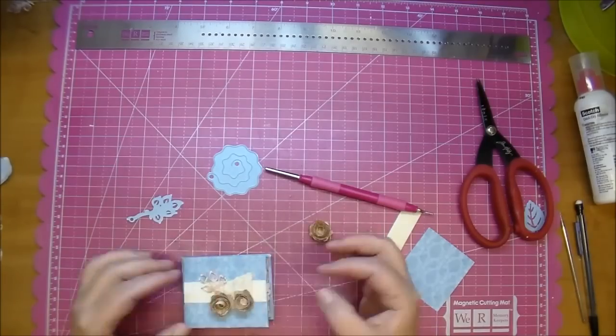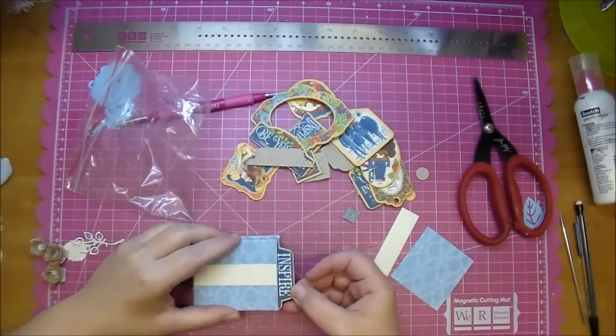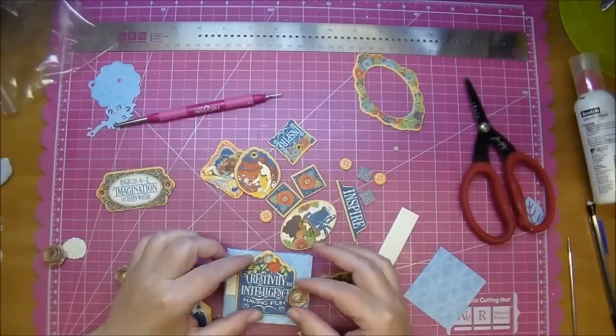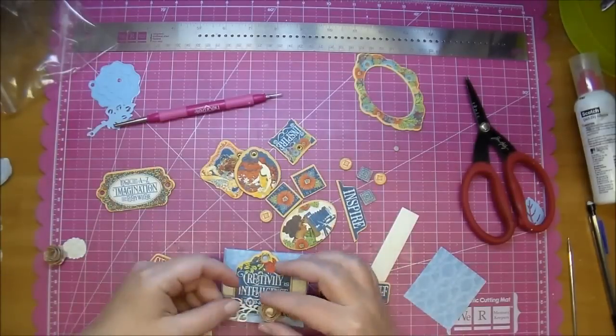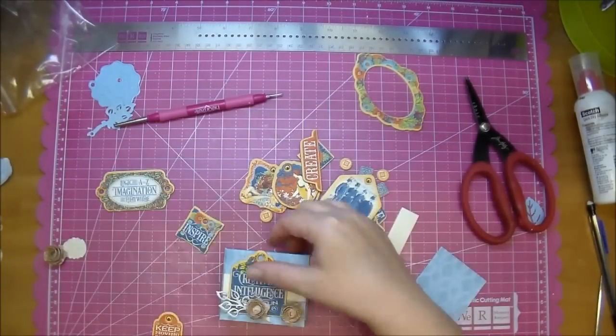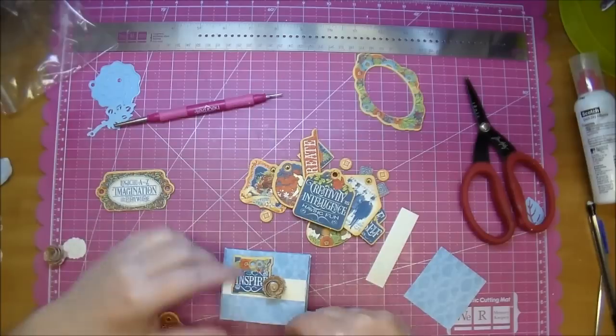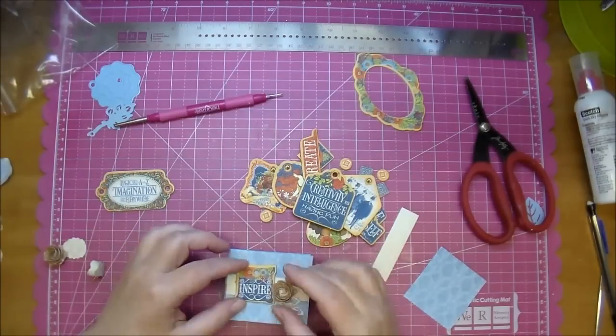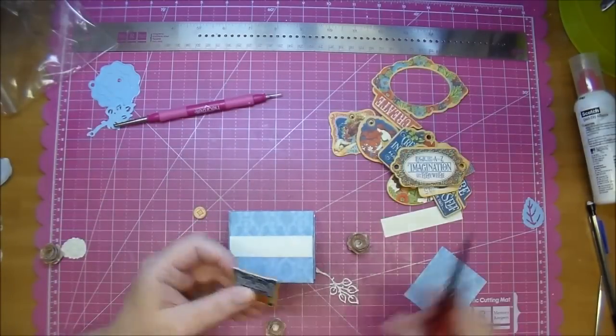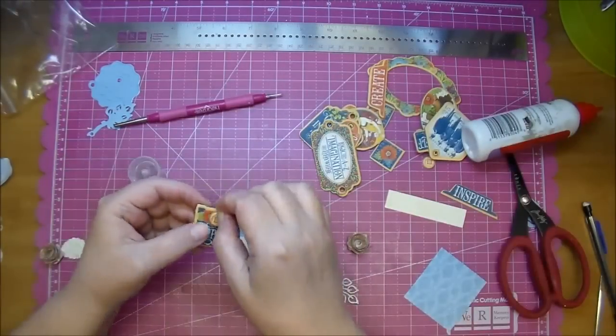I pulled out some tags, some journaling tags from the World's Fair collection by Graphic 45. I didn't have the tags of the Gilded Lily but I thought that these went well. That's what I love about Graphic 45. All their collections tend to go together. So I'm going to use this inspire tag and one of these little round tags that come in it and glue that to it as well.